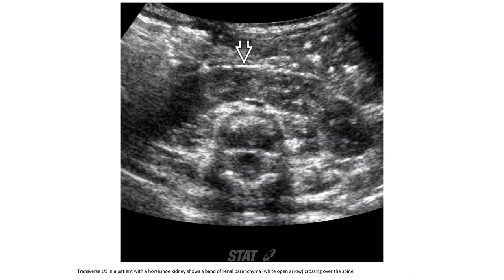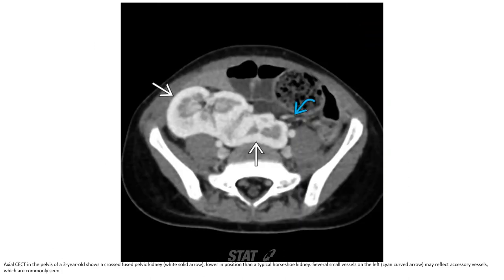Ultrasound of the patient with a horseshoe kidney shows a band of renal parenchyma crossing over the spine. Contrast imaging in a three-year-old shows a crossed pelvic kidney, lower in position than a typical horseshoe kidney. Several small vessels on the left may reflect accessory renal vessels, which are commonly seen.